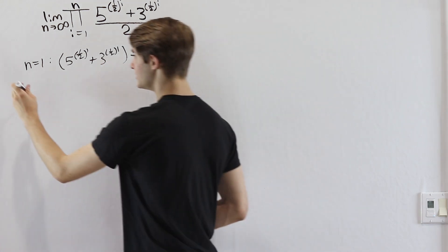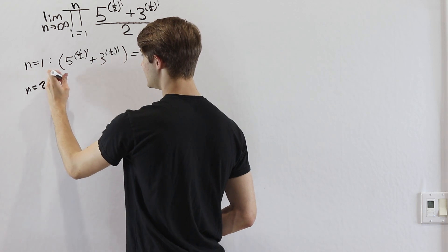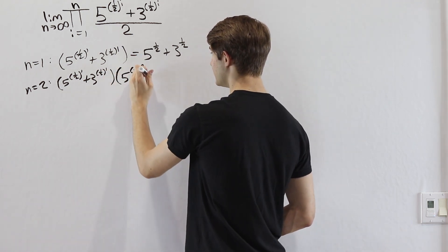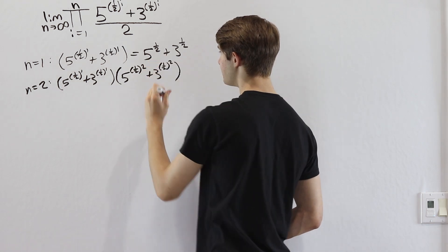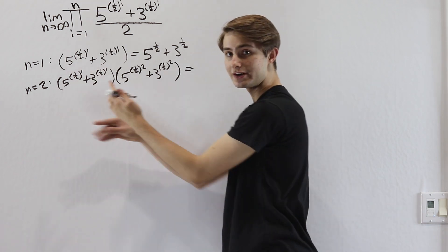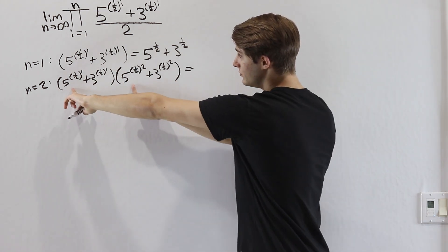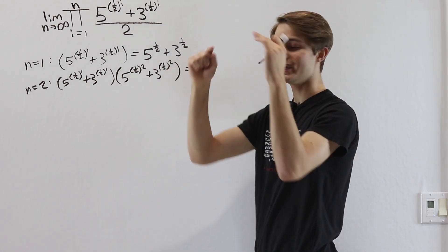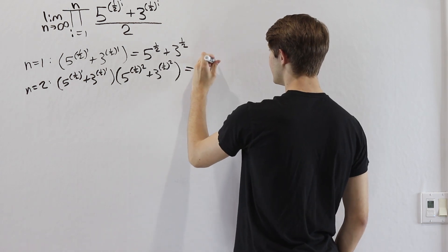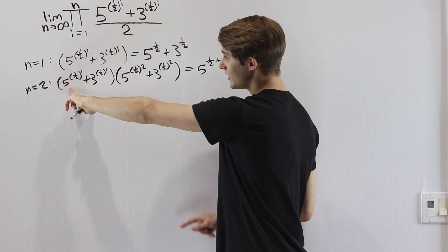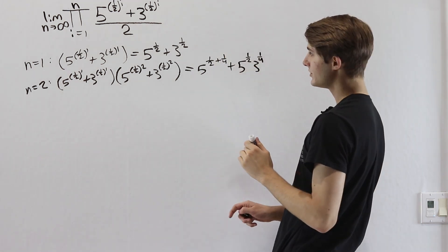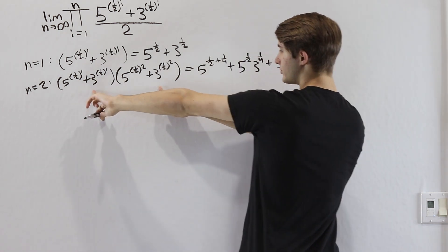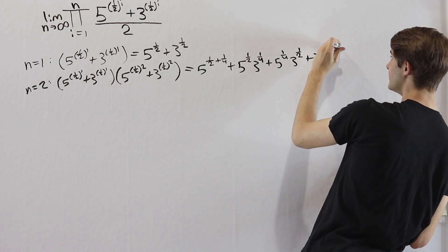For n equals 2, we multiply: (5 to the 1/2 plus 3 to the 1/2) times (5 to the 1/4 plus 3 to the 1/4). Expanding via FOIL gives us 5 to the (1/2 + 1/4), then 5 to the 1/2 times 3 to the 1/4, then 5 to the 1/4 times 3 to the 1/2, and finally 3 to the (1/4 + 1/2).